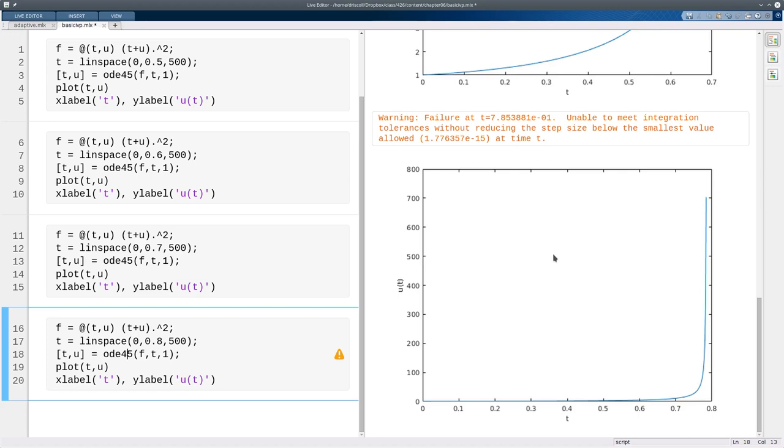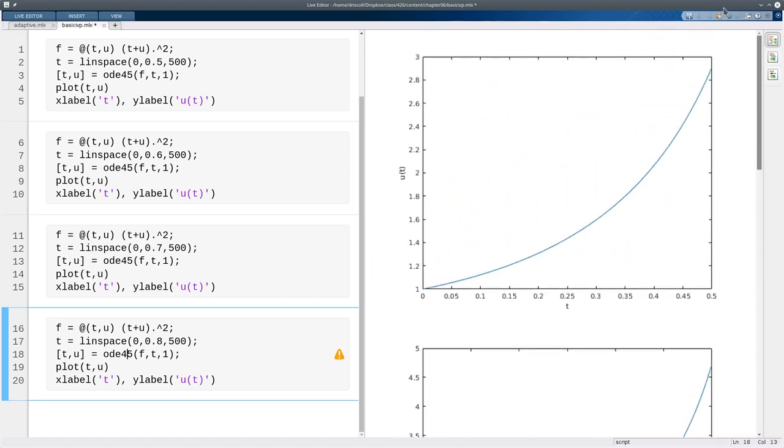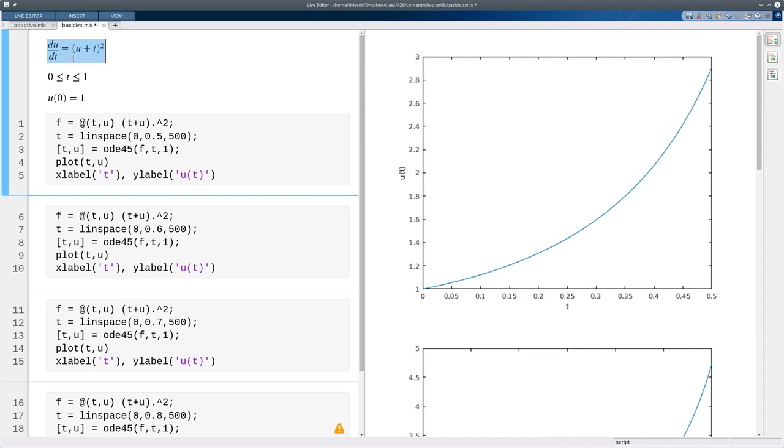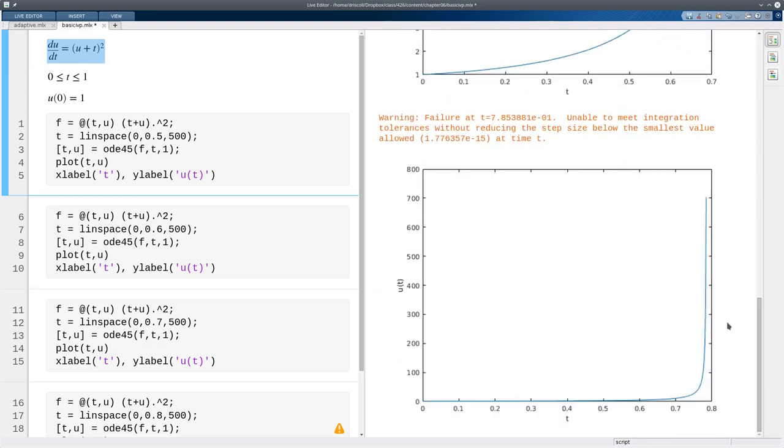So you'll notice that the solution, which was growing kind of slowly, suddenly took off and grew very quickly. In this problem, if du/dt is proportional to u, then you get exponential growth. Well, this is even faster than that. And in fact, it's so fast that the solution blows up in a finite amount of time.